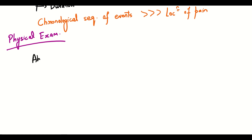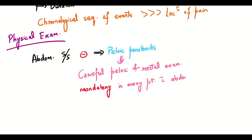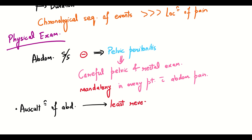One must always keep in mind that in cases of pelvic peritonitis, the abdominal signs and symptoms may entirely be absent. So, careful pelvic and rectal examinations are mandatory in every patient with abdominal pain. And last of all, the auscultation of the abdomen is considered to be one of the least revealing aspects of the physical examination.